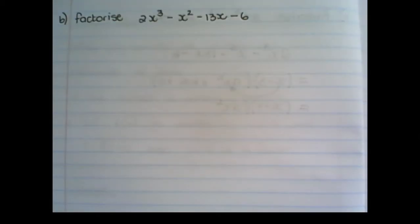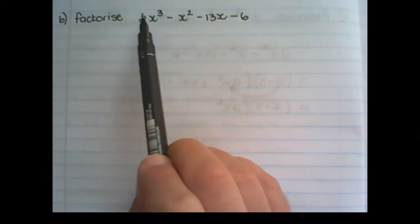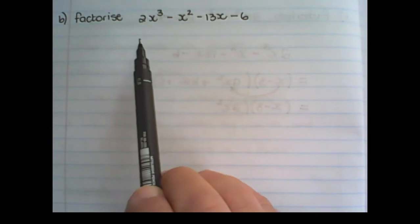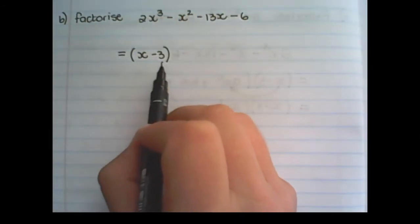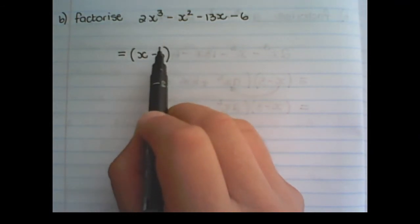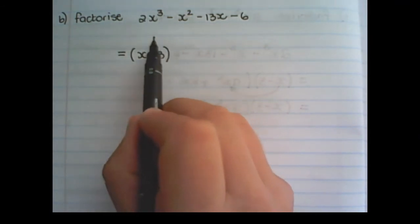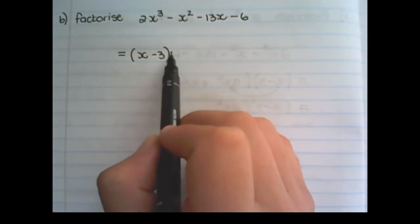We have found that x minus 3 is a factor of this expression. We can use that factor to factorize it. So in the previous example, we said that x minus 3 is a factor, meaning it will go perfectly into this expression with a remainder of zero.